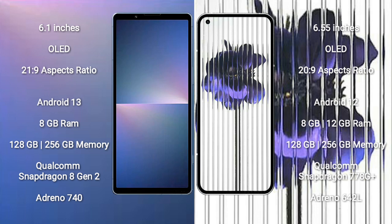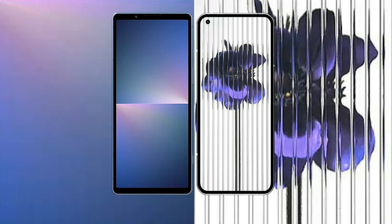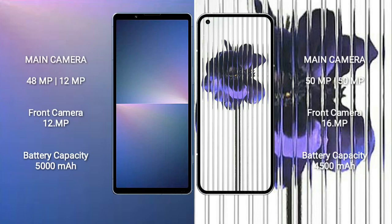Nothing Phone 1 comes with 8GB to LGB RAM and 128GB to 56GB internal storage, Qualcomm Snapdragon 770 8G Plus processor, and GPU Adreno 642L.